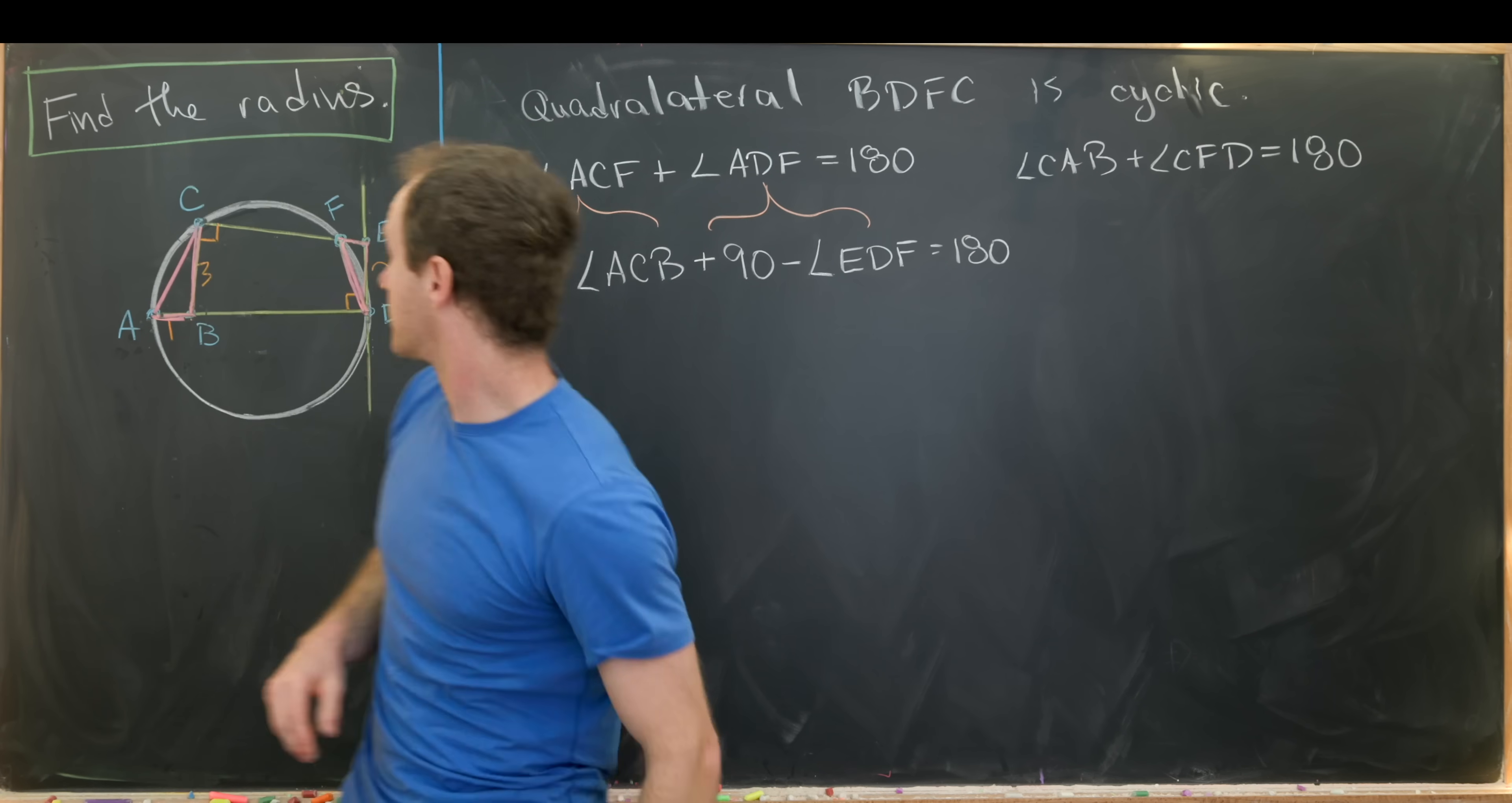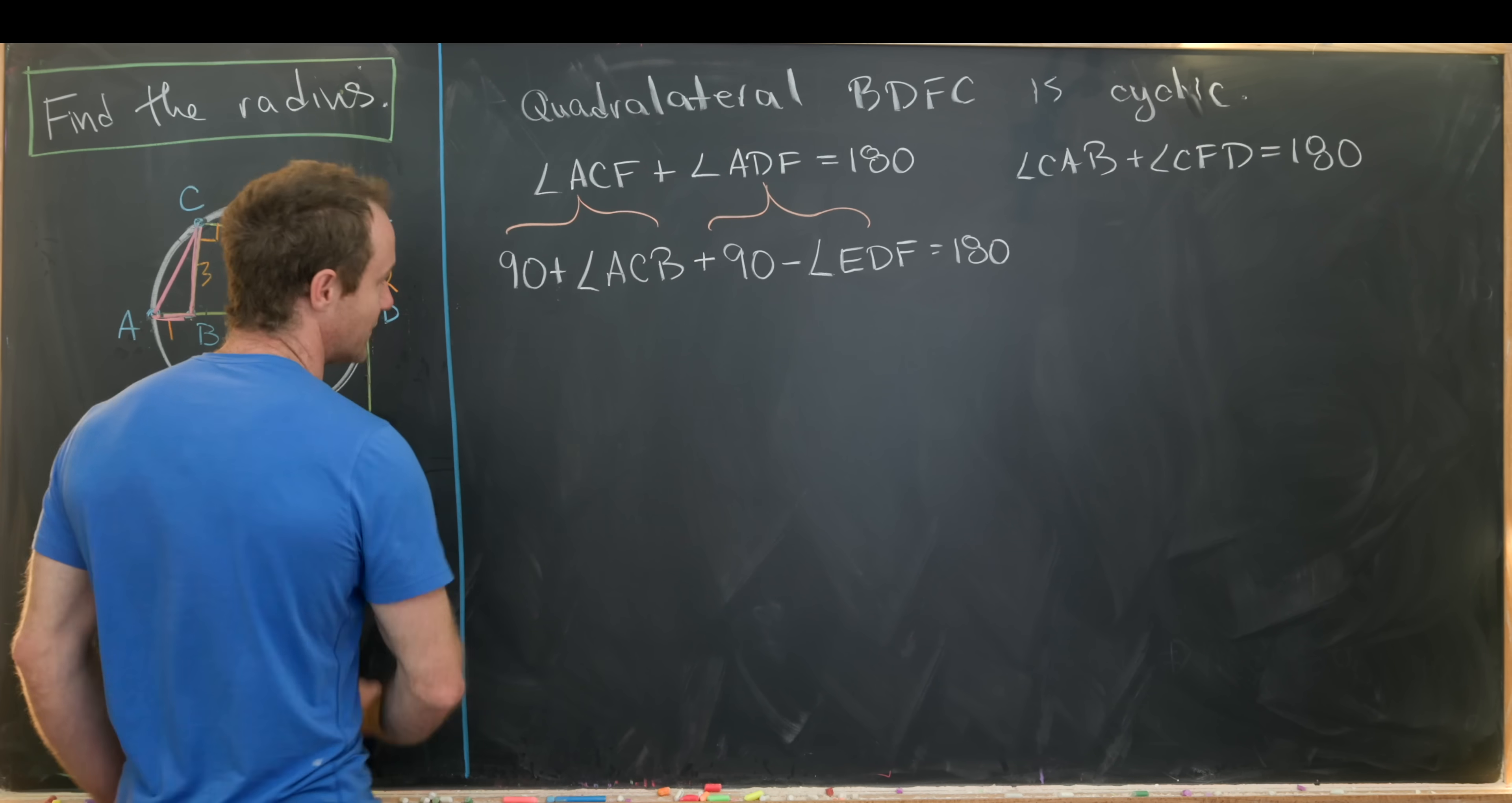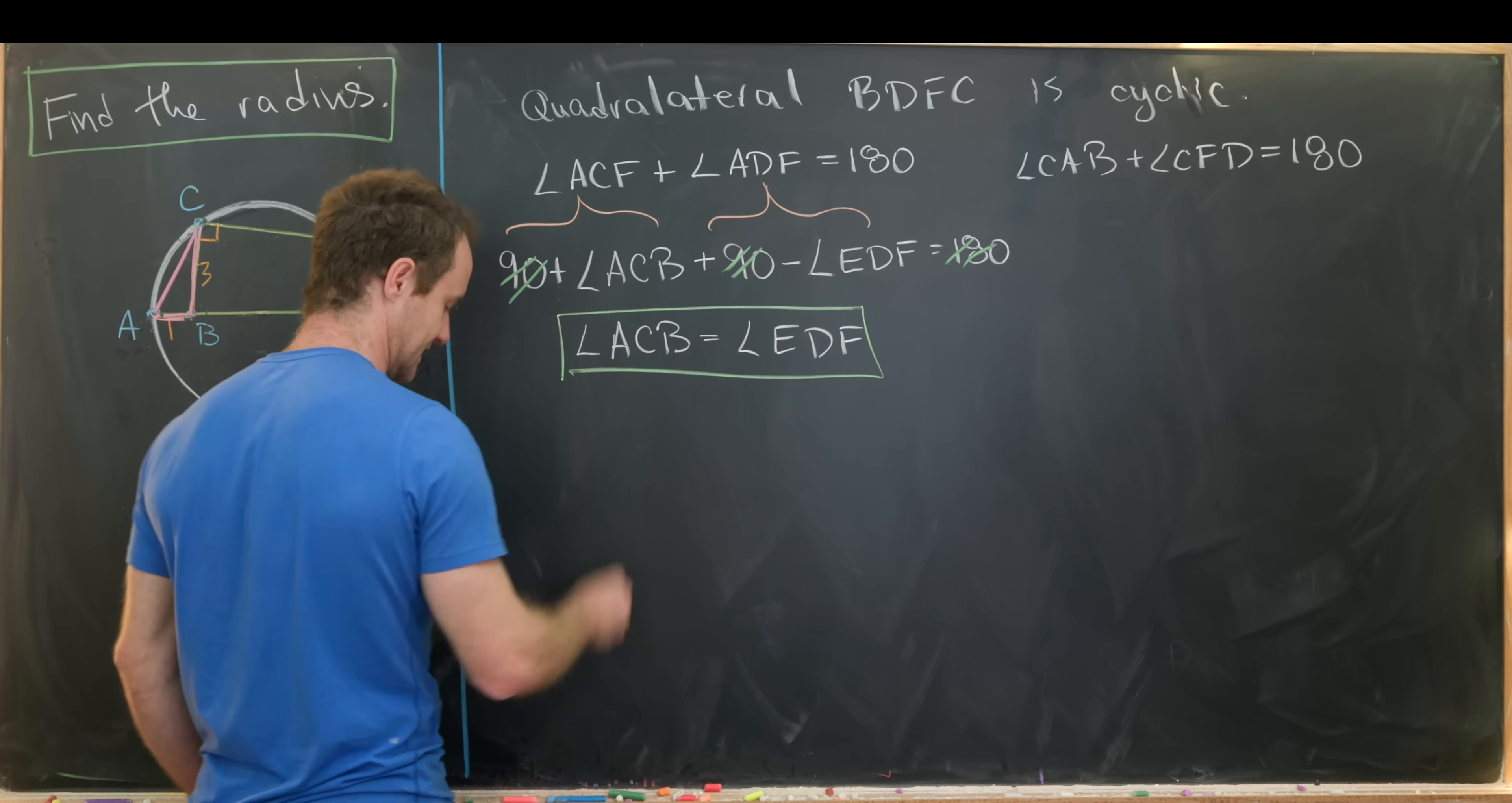So this will give us 90 minus the angle measurement of EDF, and then we still have this equals 180 on the other side. Let's notice that that cuts through this right angle by the angle FDE, or we call it EDF. But next up, we can notice that this 90 and 90 add up to 180, so those cancel, and then we can rearrange this to get angle measure ACB is the same thing as angle measure EDF.